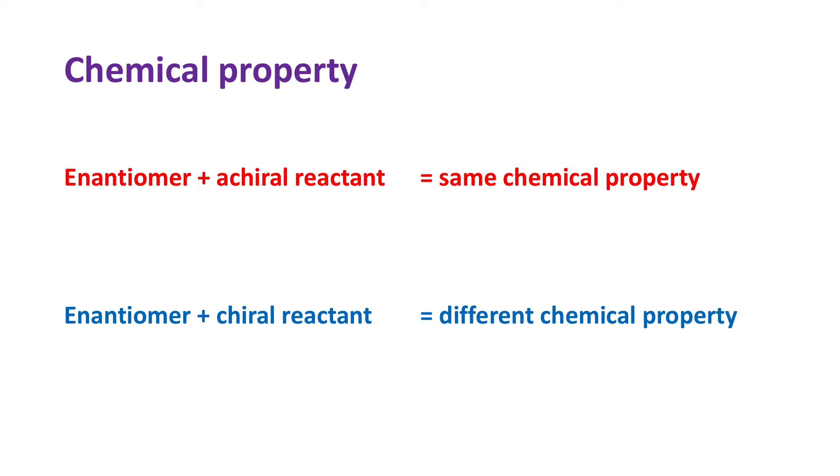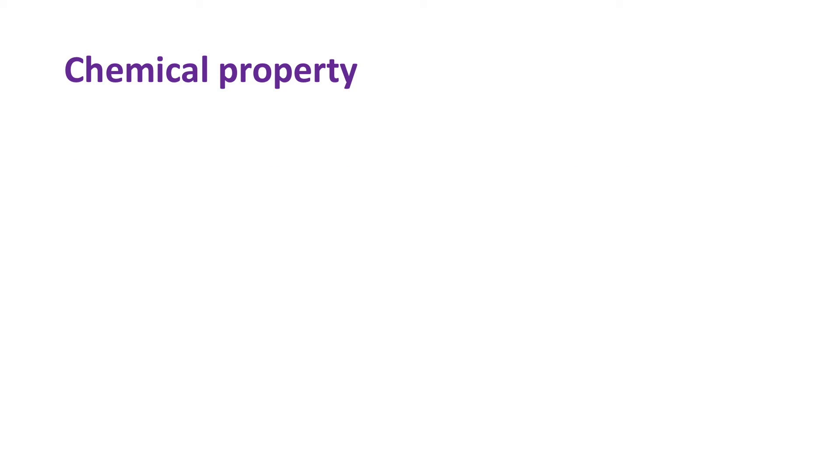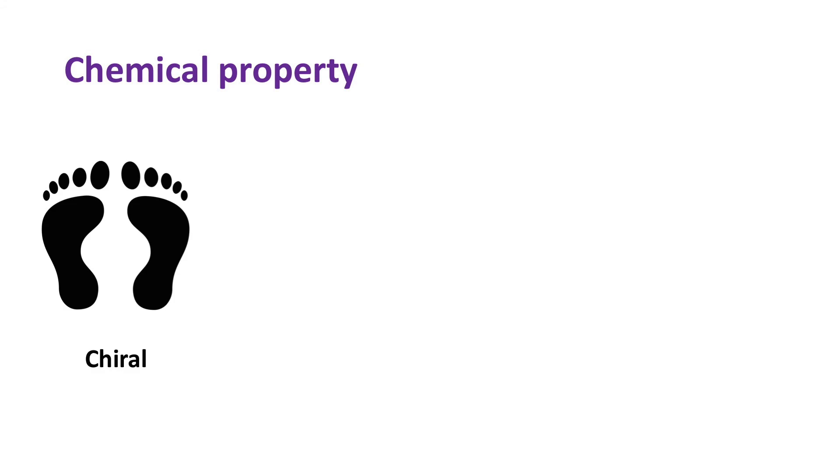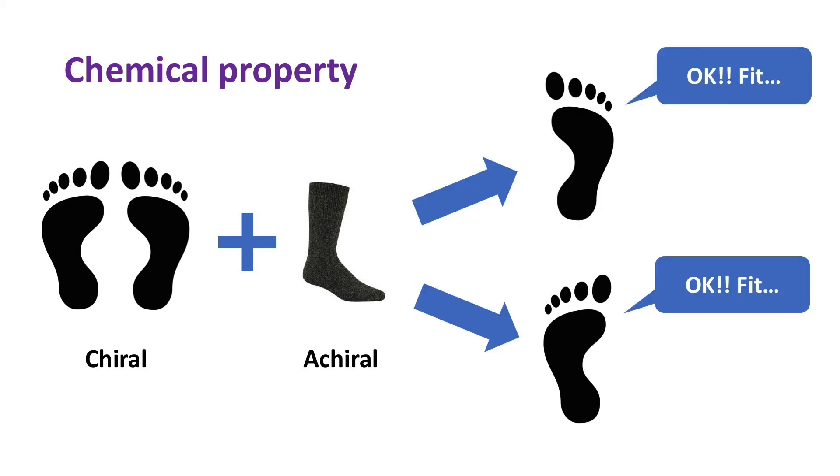Here is another illustration. Our feet is chiral, which represents a pair of enantiomers. This sock is an achiral object, so you can wear it on either left or right foot. In terms of chemical reaction, both feet give the same product or show same chemical properties.